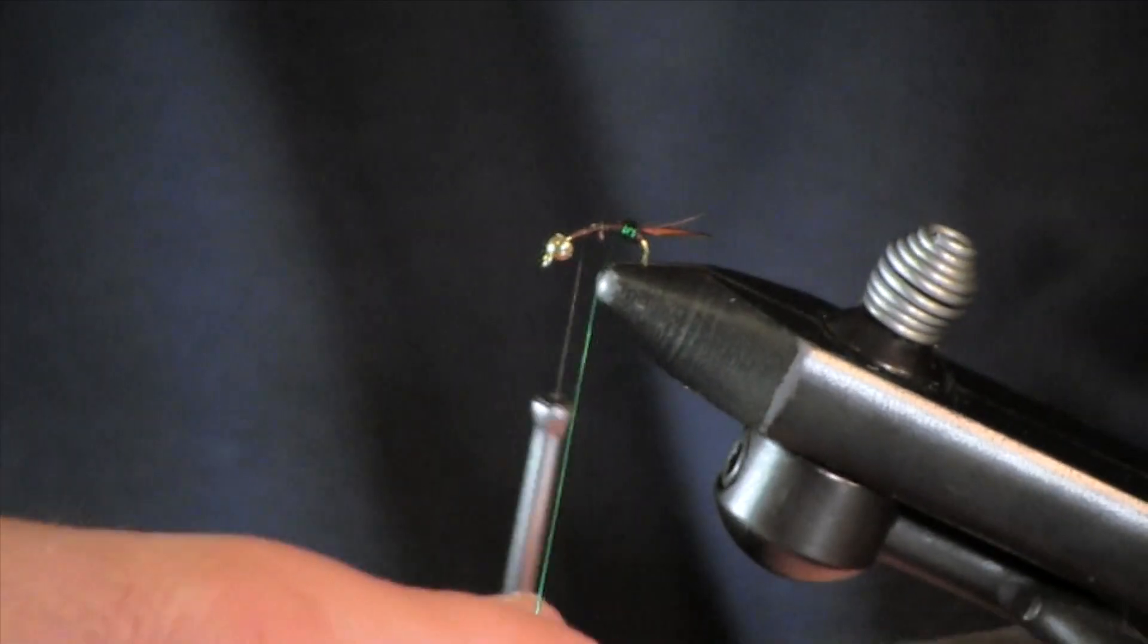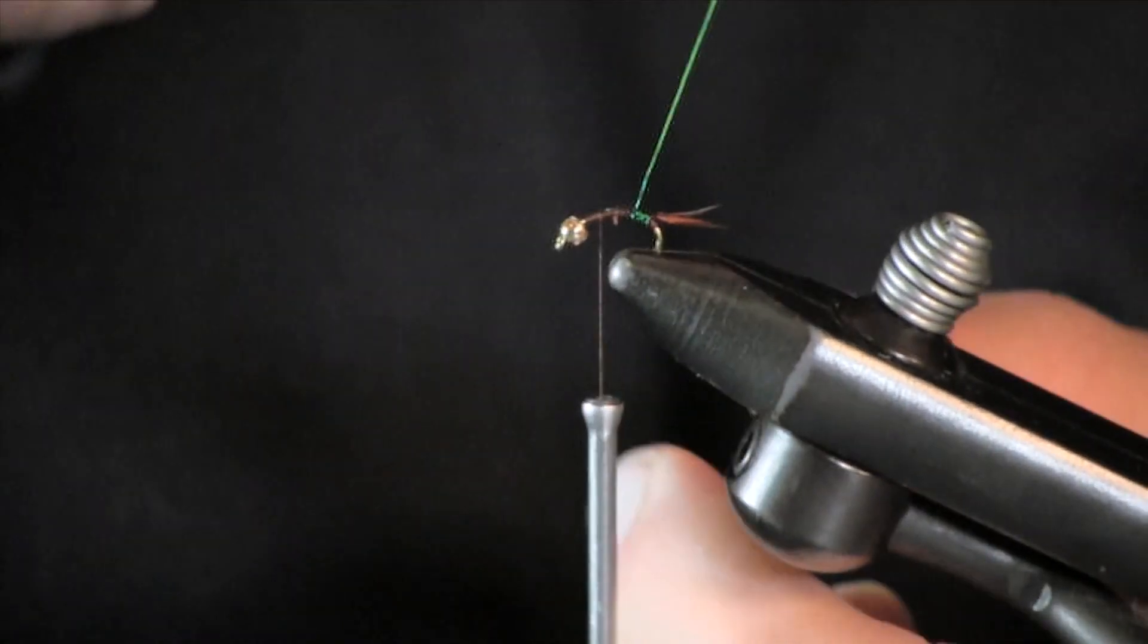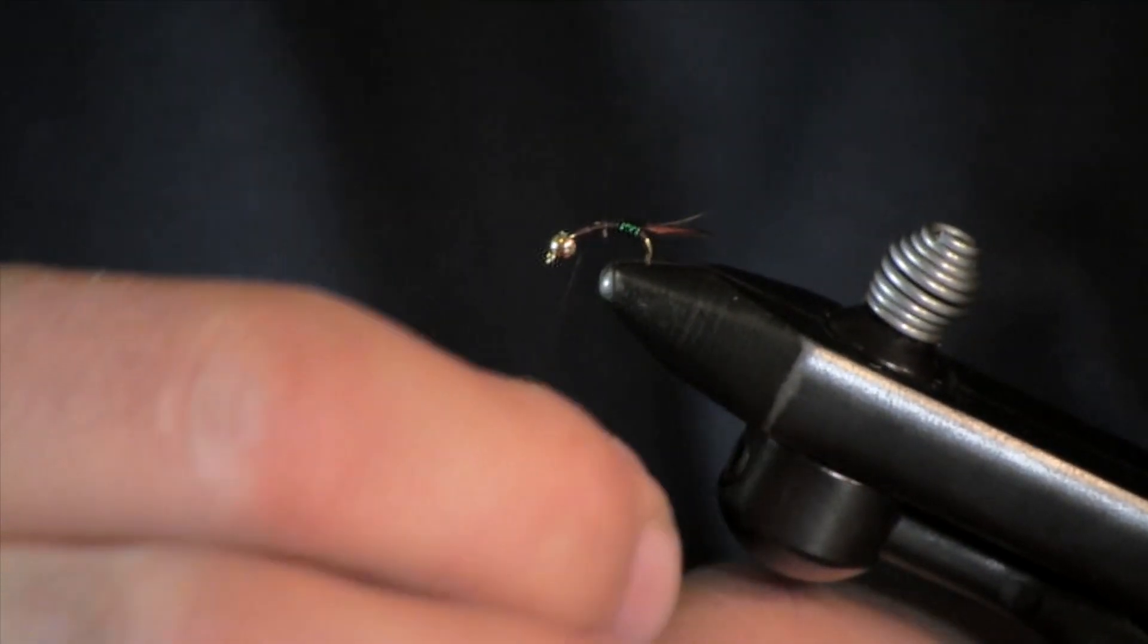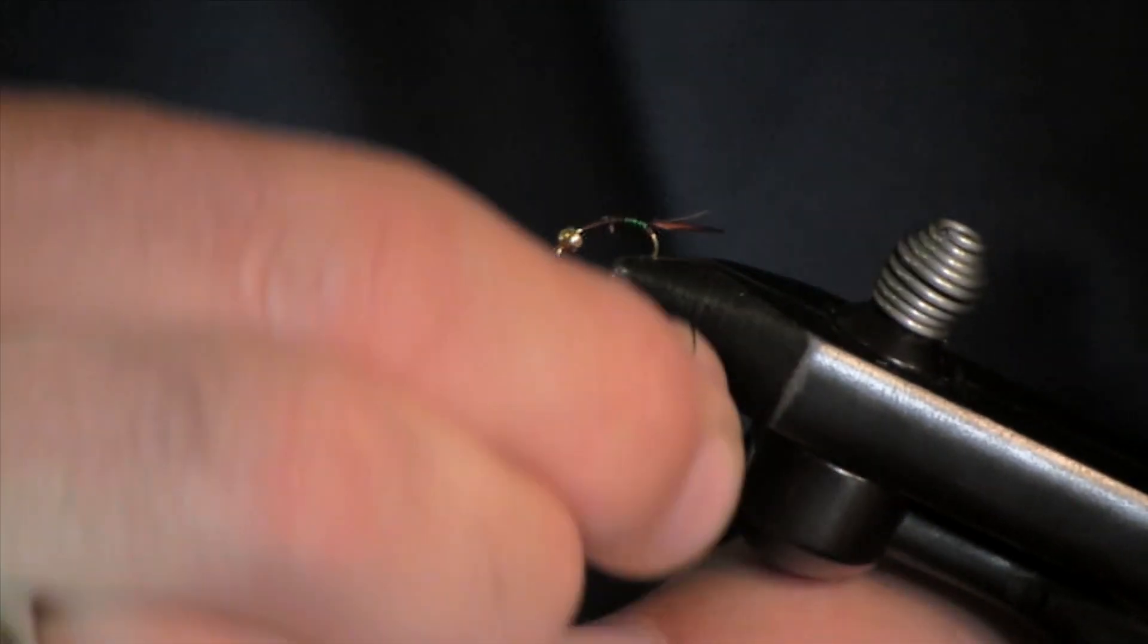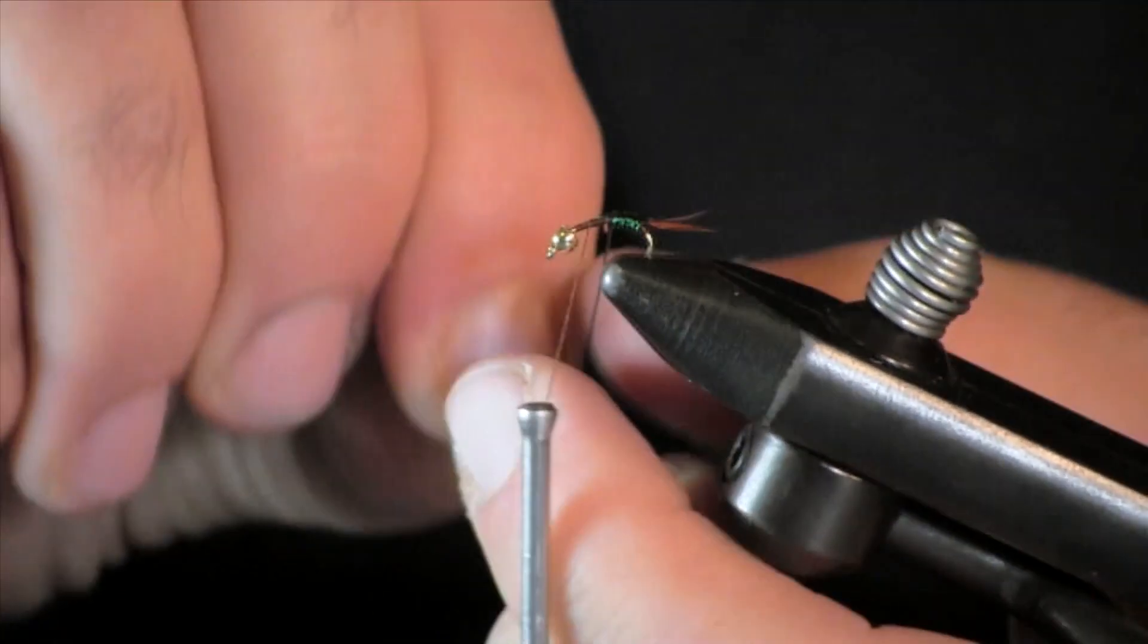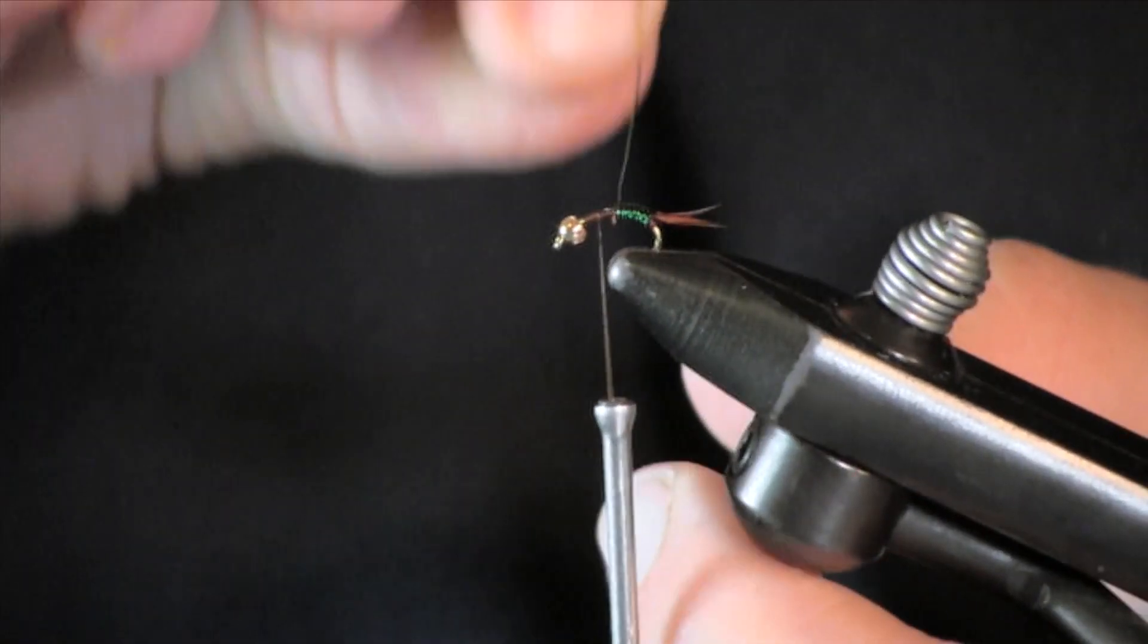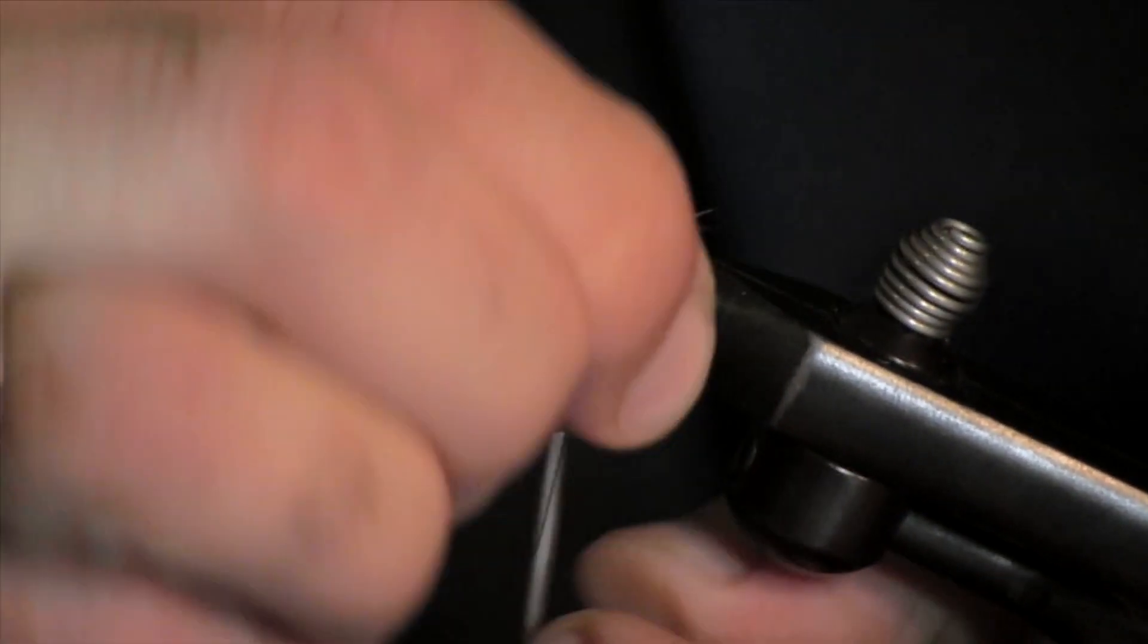This is a very generic fly, like your hare's ear, your brassies, you know, just a standard generic nymph. It doesn't really imitate anything, it imitates a lot of things, kind of deal, just a standard fly you want in your box. Kind of a simple one, we will include this in our beginners series.